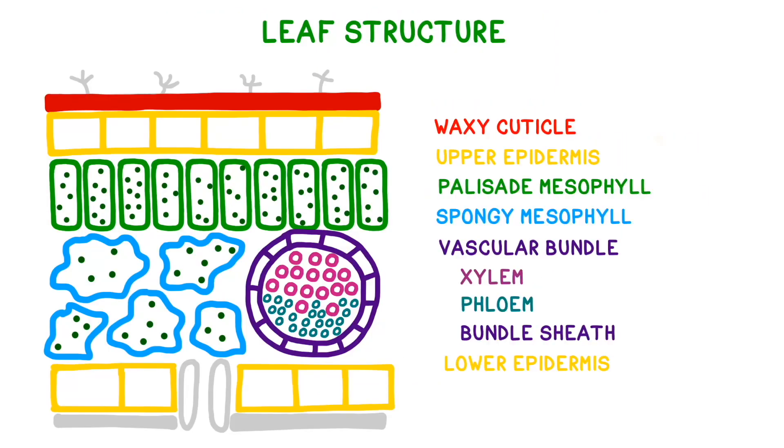The lower surface of the leaf also contains a layer of epidermal cells called the lower epidermis. This is also meant to prevent water loss.